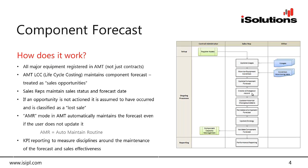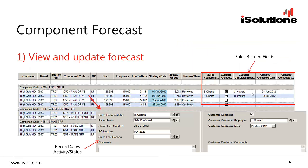Coming out of the whole process is a validated component forecast that the sales rep signs off on, confirming all opportunities have been reviewed and actioned, and which ones are confirmed by the customer. That then feeds into the central role around capacity management. These forms for the sales rep show the same component changeout schedule — components listed, when they're next due, and the same fields that can be updated.